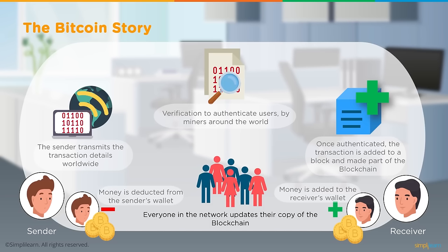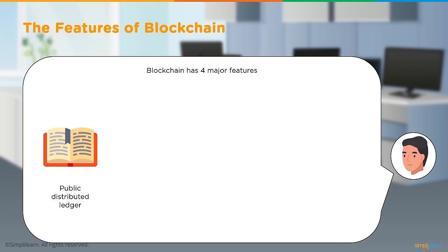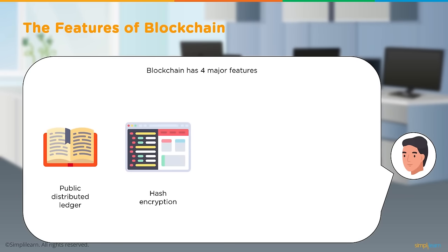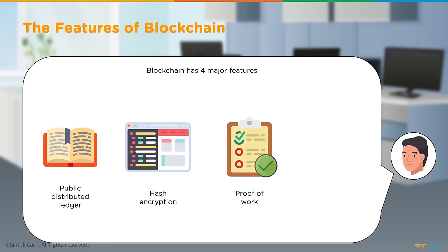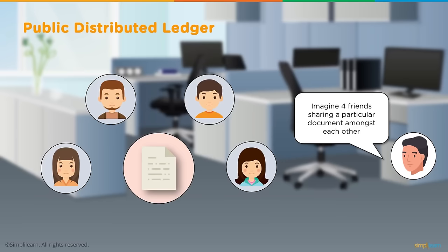What makes blockchain special? The four key features are: it is a public distributed ledger; it uses hashing encryption where every block has a hash value acting as a digital signature; all transactions are approved using proof of work consensus algorithm; and the network utilizes miners who validate transactions and receive rewards in bitcoin — a process called mining.